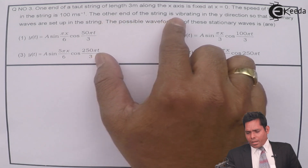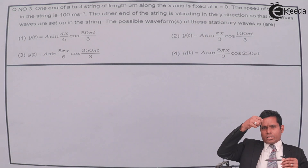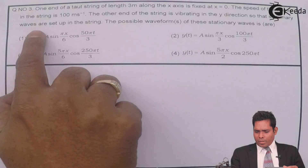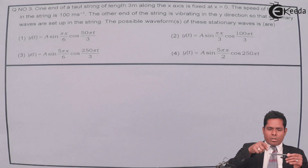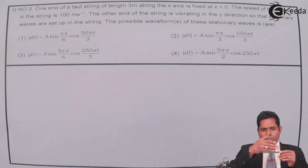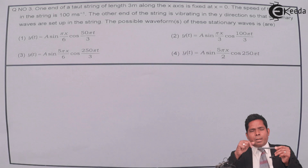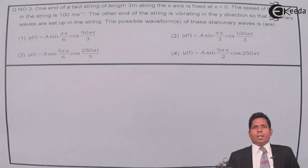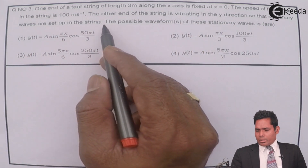The other end of the string is vibrating in the y-direction — this free end is vibrating in the y-direction. When you start vibrating continuously, this wave will be transmitted along the x-axis towards the origin and gets reflected back, because that is a fixed end. The incident wave travels towards the origin and is reflected back. Due to the superposition of incident and reflected waves, a stationary wave is set up in the string.